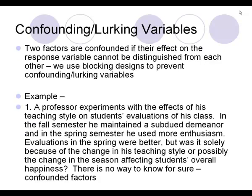Confounding and lurking variables are two factors that aren't isolated from each other, so we don't know which variable caused which effect. For example, a professor experiments with teaching style — subdued in the fall, more enthusiastic in the spring. Evaluations in spring were better, but we don't know if it was his teaching style or the season change that affected results. He should have tested both styles within the same semester to avoid confounding.